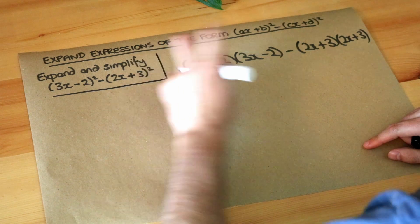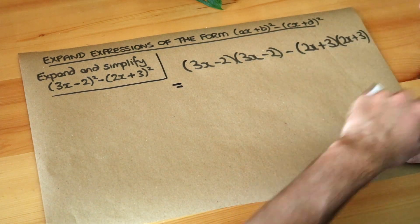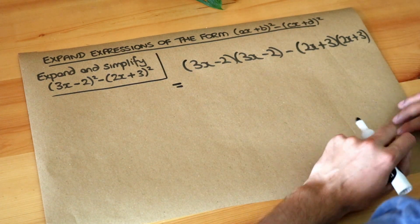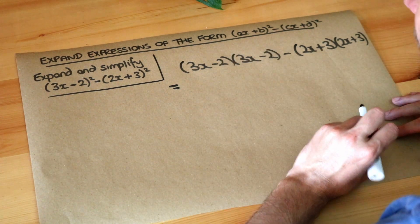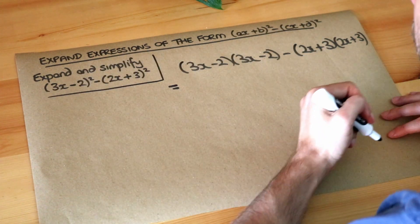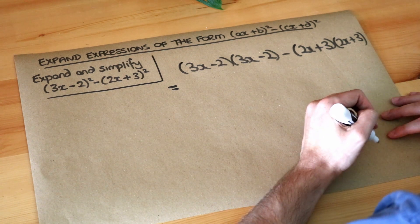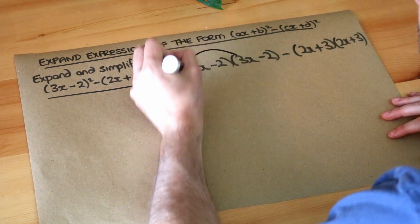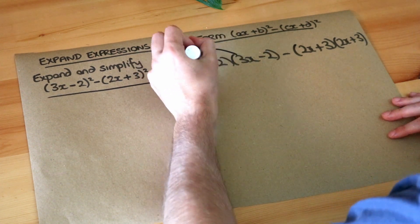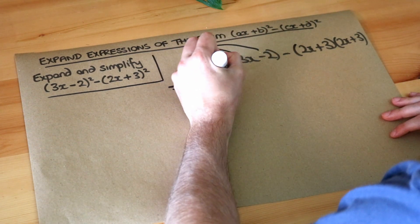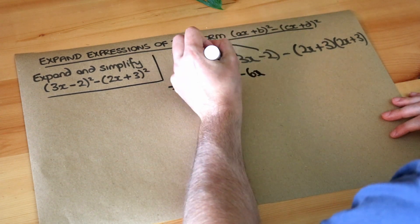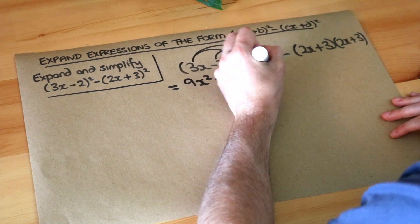So let's expand these two brackets and then worry about what we do after that. So we do each thing in the first bracket times each thing in the second. I'm going to do this quickly because we've explored how to multiply two brackets many times in previous videos. So 3x times 3x is 9x², that times that is -6x, another -6x, and -2 times -2 is +4.